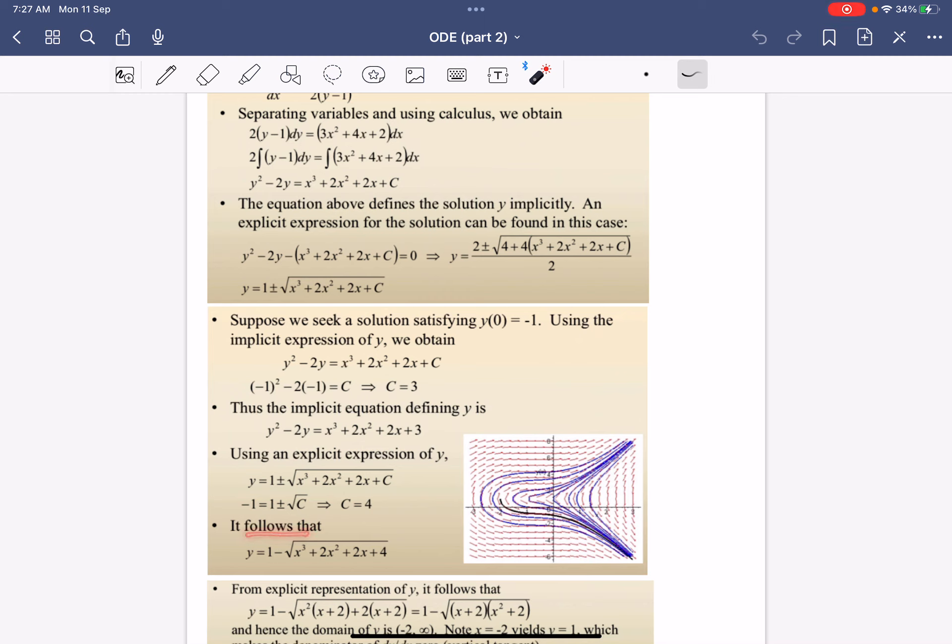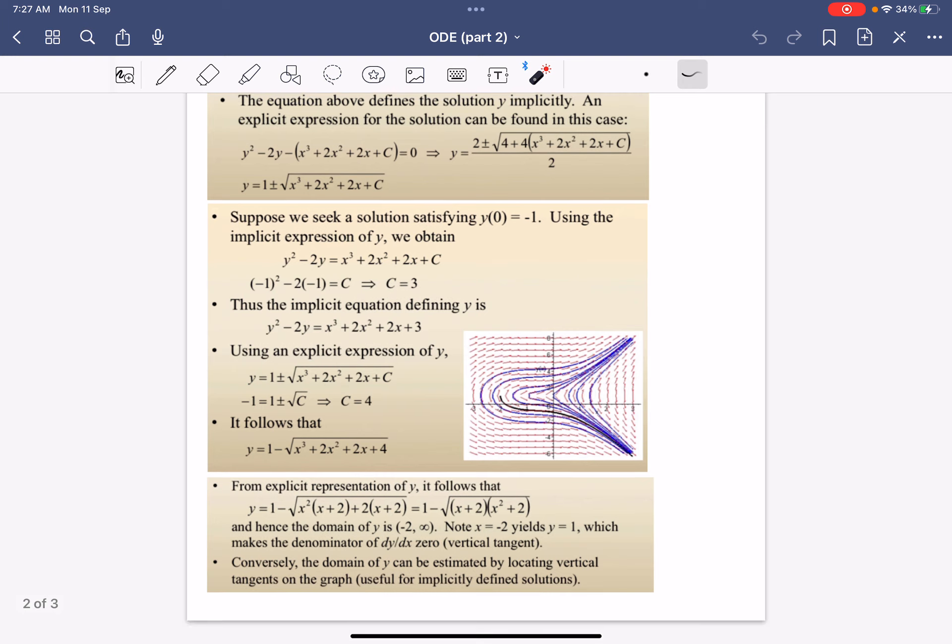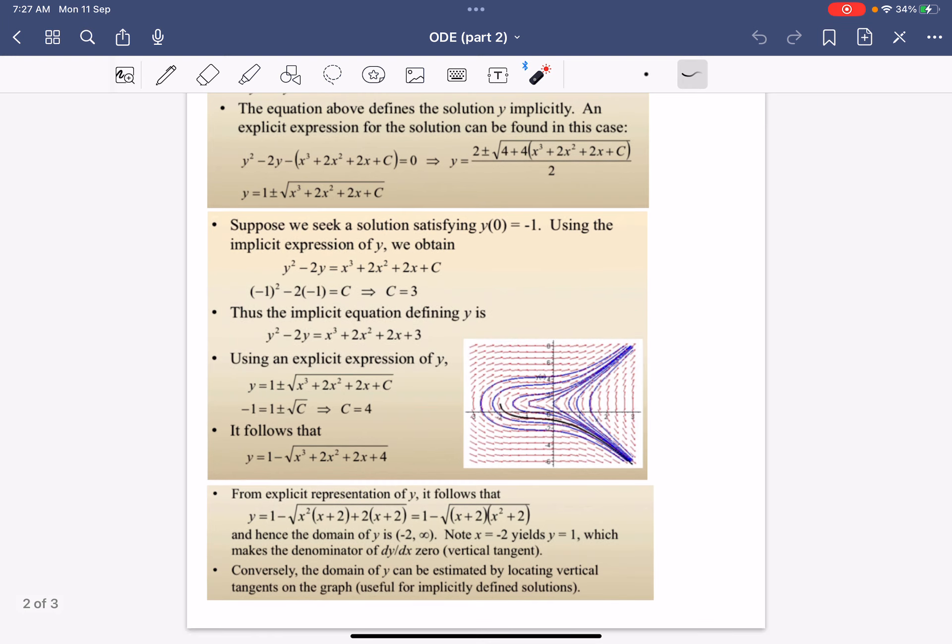Following that, because we know the IVP is y(0) = -1, it cannot be the plus version because then it doesn't satisfy the initial condition, so it must be the negative version.